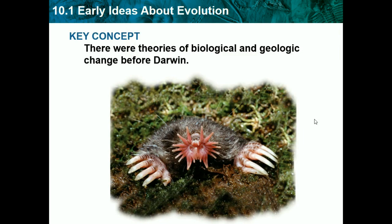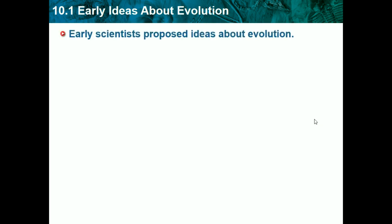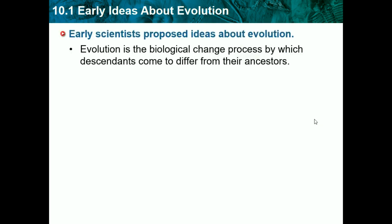As we know, Darwin was the guy that invented evolution or thought of the idea, but there were actually scientists before him that thought of this. Early scientists proposed ideas of evolution. Evolution is the biological change process by which descendants come to differ from their ancestors. So basically, over time, animals start to adapt to the environment and their kids have better adaptations than their ancestors.